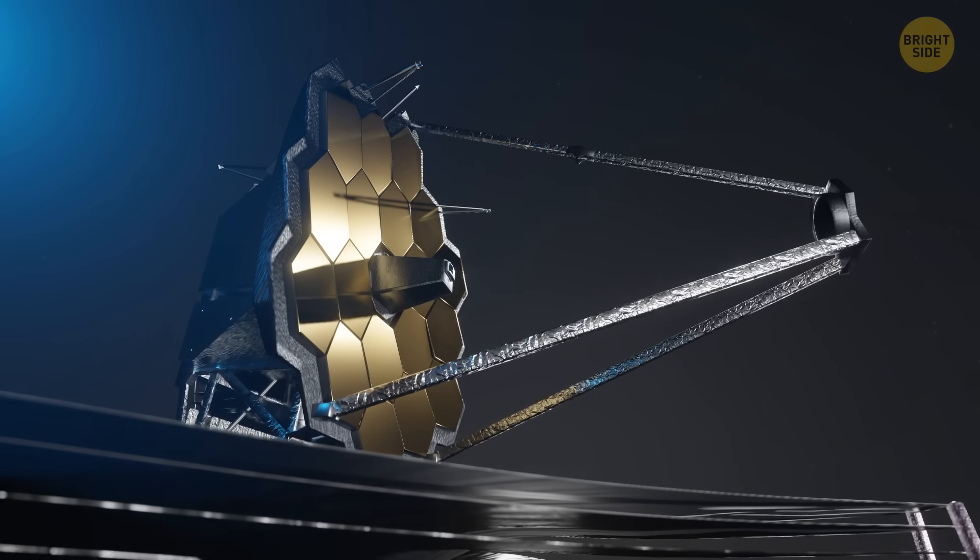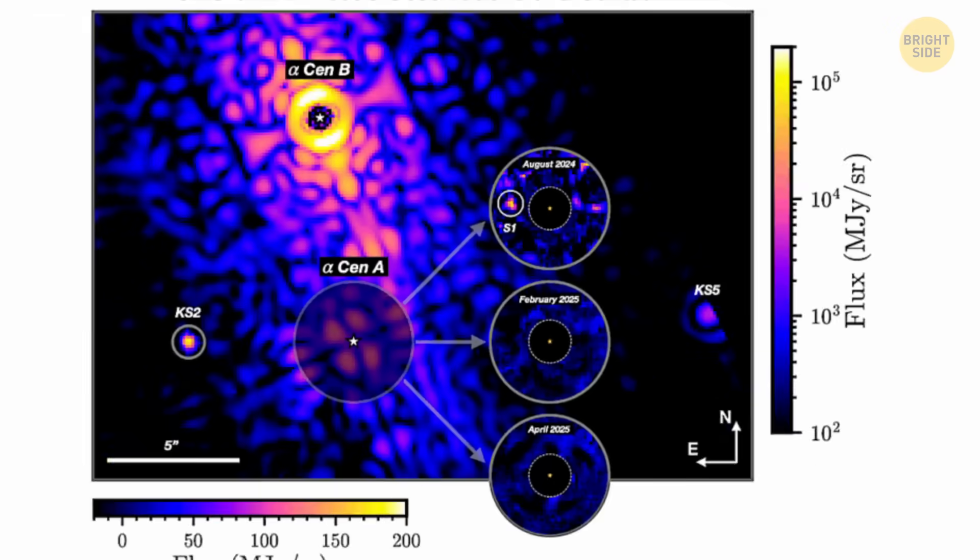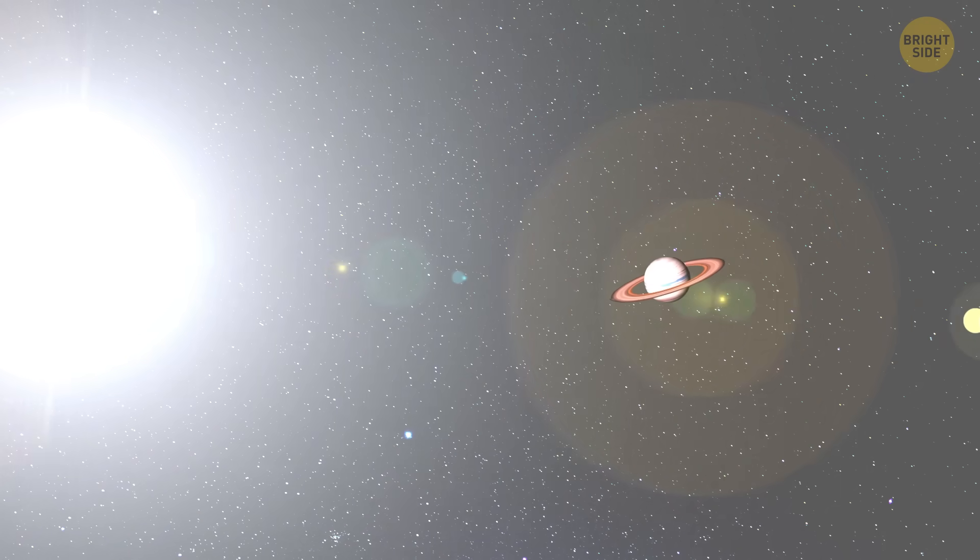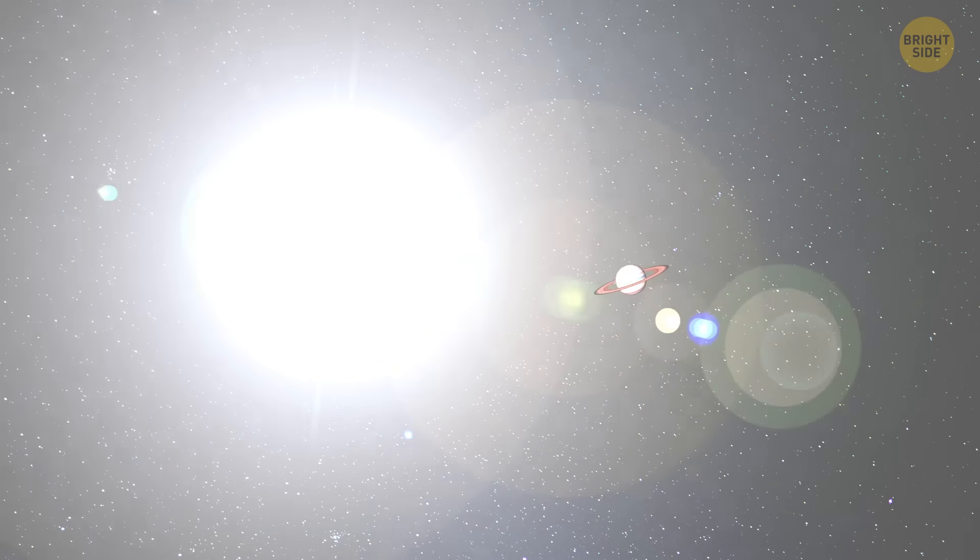But when they went back in early 2025 to check again, poof, gone. Some people even thought it was never there. But the data suggests it's real, and it's probably just swung around in its orbit, hiding behind the light.